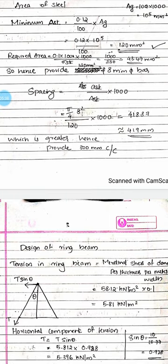We provide the minimum AST of 120 mm² using 8 mm diameter bars. The spacing equals (area of one bar divided by AST) into 1000. The spacing works out to 416 mm, but we use the minimum spacing of 300 mm center to center.